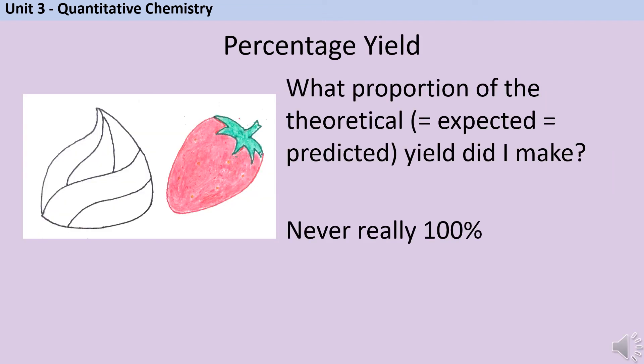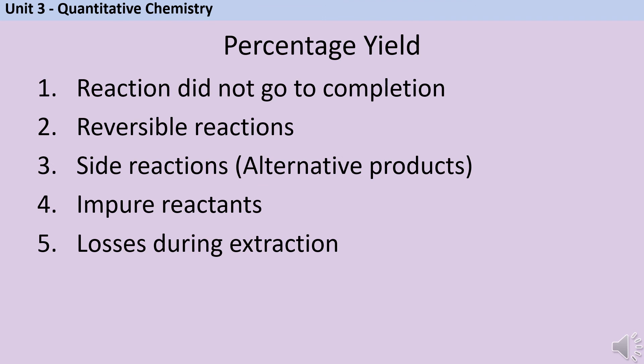Now we're going to have a look at percentage yield. So whereas atom economy was a theoretical concept, I could do it just from the chemical equation. Percentage yield is all about what's actually going on in real life. How much of the theoretical yield or the expected yield did I actually make? And it's never going to be 100%. There are five main reasons why that might be. The first one is that the reaction might not have finished. I might just not have let it go on for long enough. That's especially true if it's a reversible reaction, because reversible reactions are going to tend to stop somewhere in the middle and reach equilibrium. The third option is that there are side reactions going on that are making alternative products.